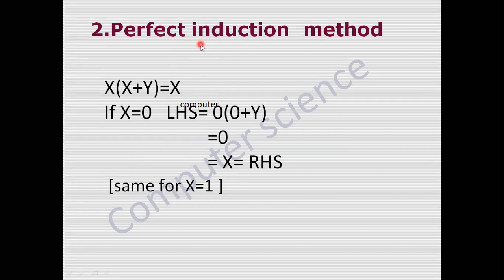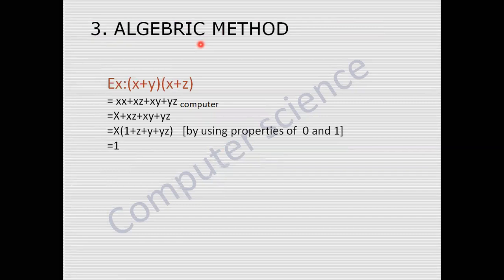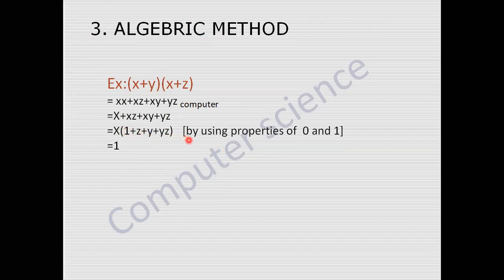This is the perfect induction method: to evaluate a logical expression, either we can substitute zero for a literal or one for the literal. The third one is the algebraic method. Here I give the example x plus y into x plus z. By distribution we get xx plus xz plus xy plus yz. Taking x as common gives x into (one plus z plus y) plus yz. By using properties of zero and one the result becomes simplified. In the algebraic method we substitute basic theorems to simplify the logical expression.